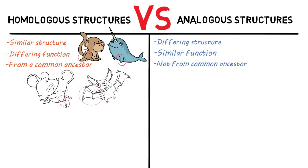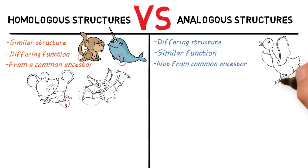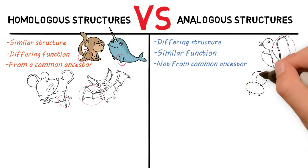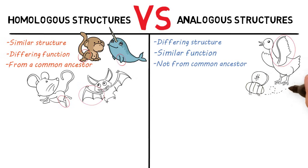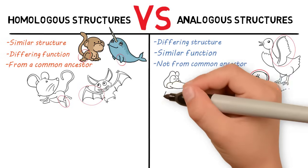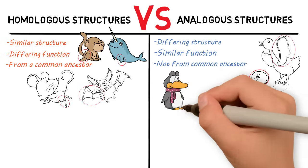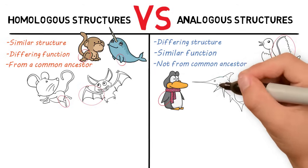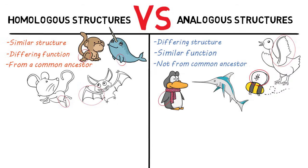Some examples of analogous structures: the wing of a bird versus the wing of an insect — definitely a similar function, but not the same structure and not from a common ancestor. Another example is the fin or wing of a penguin and the fin of a shark. They both use them to swim with, so a similar function, but a different structure.